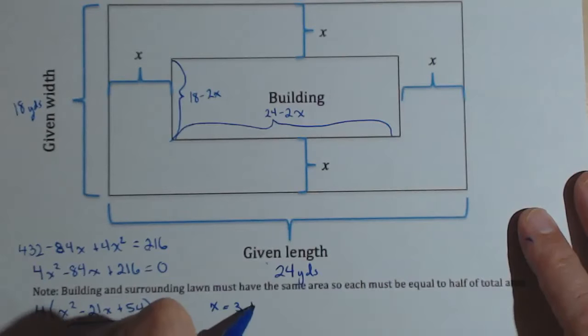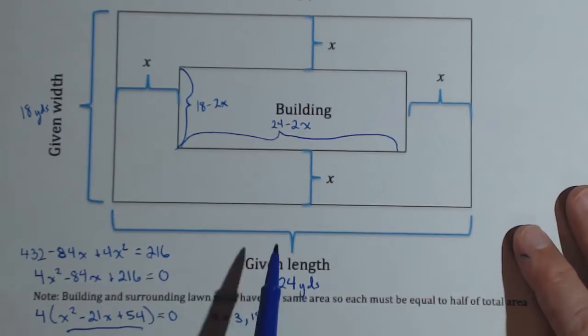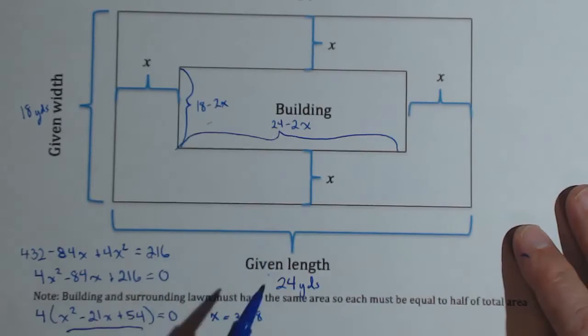But if we look at our context, 18 is not going to make any sense because that would give us a negative length for the building. So in this context, 18 doesn't work. So X is going to be 3 and all we have to do now is sub that in to get the lengths of our building.